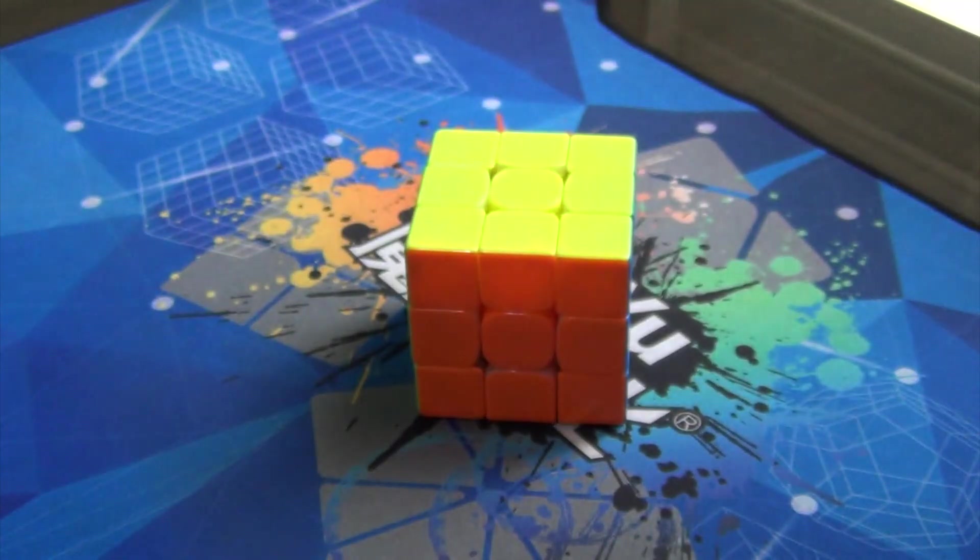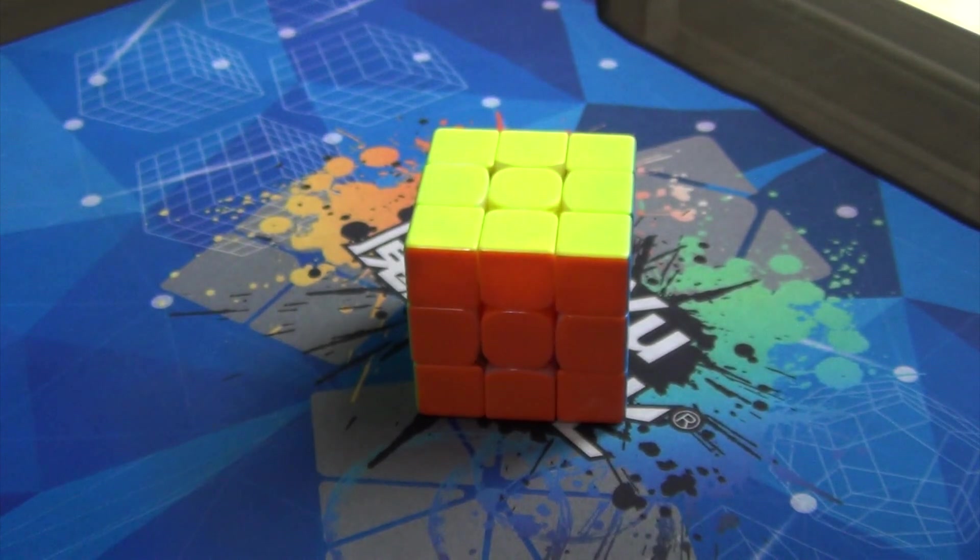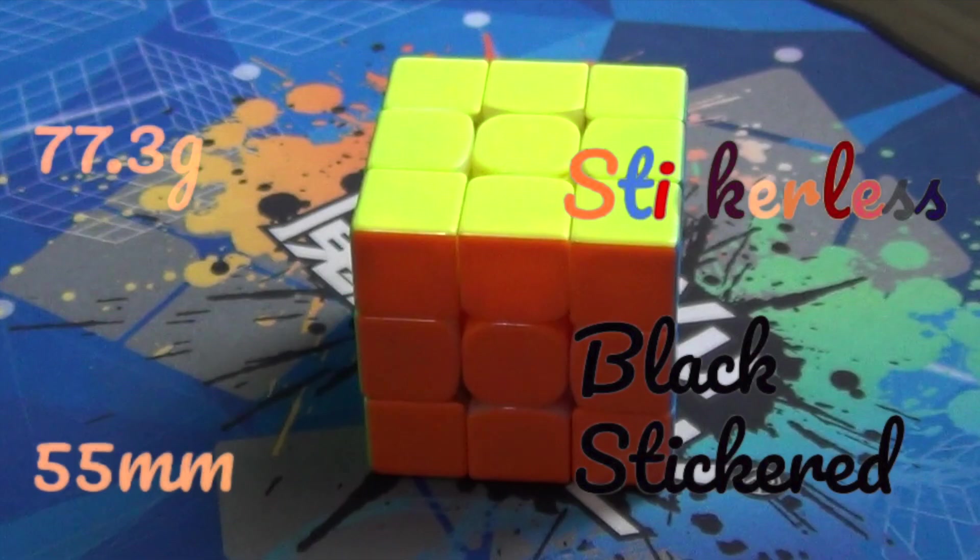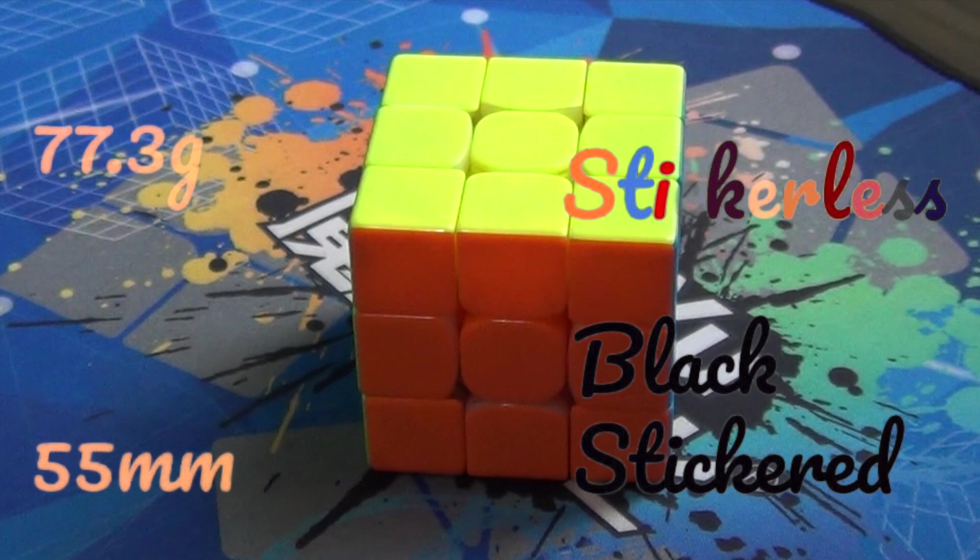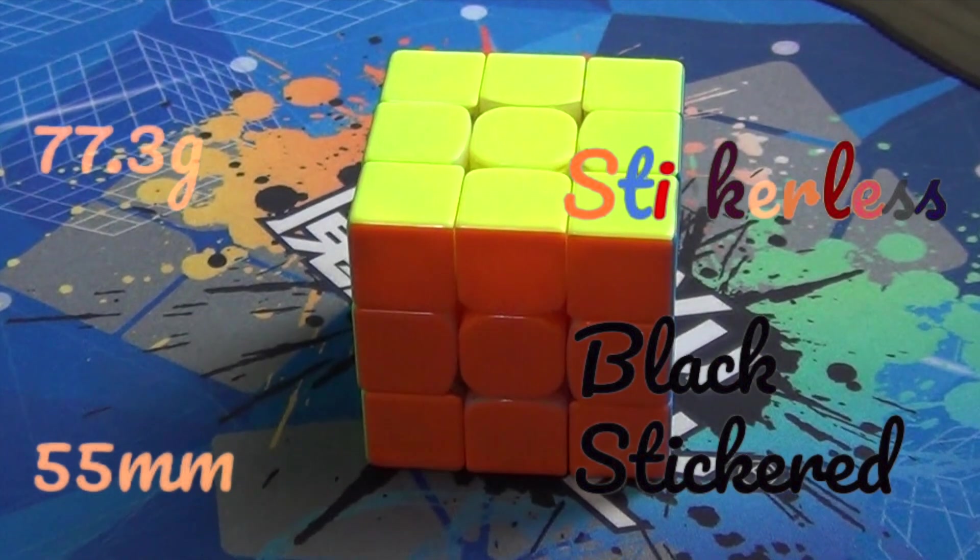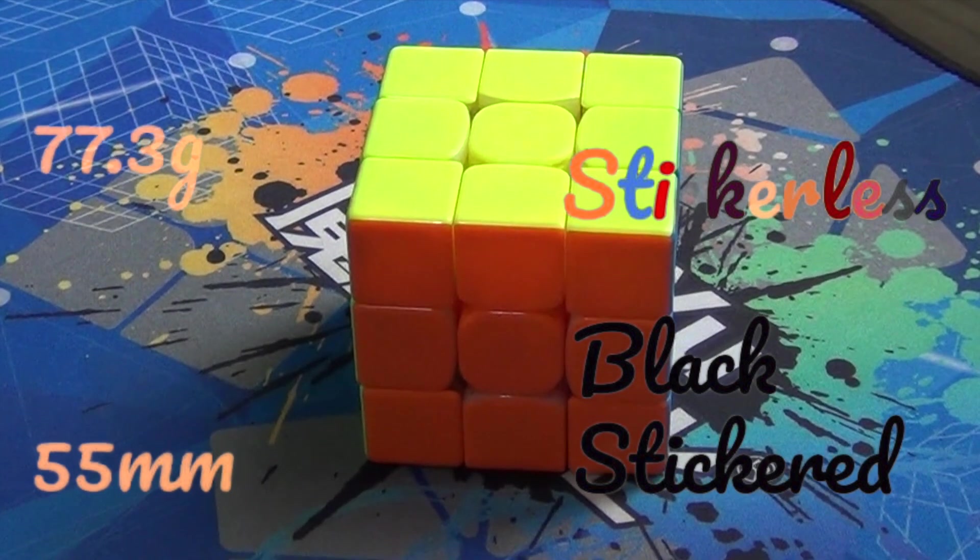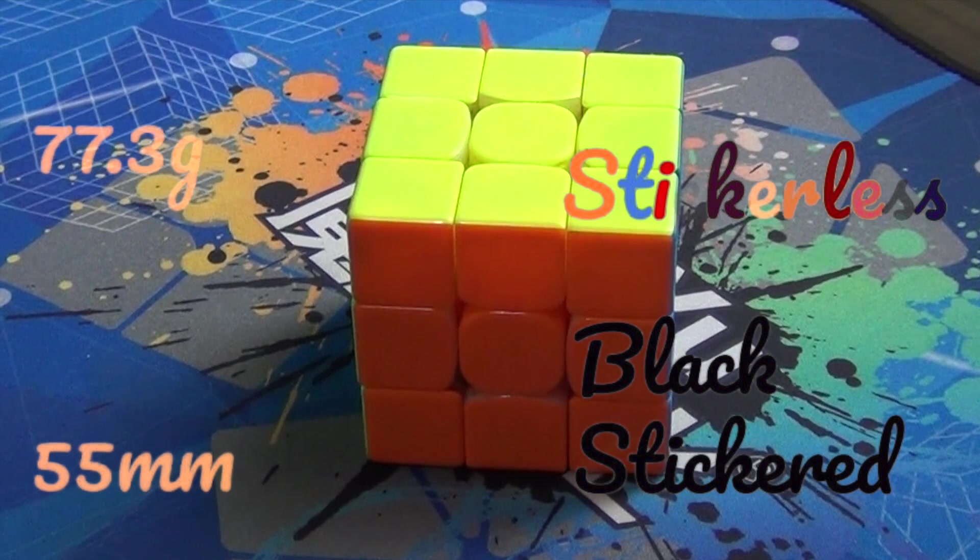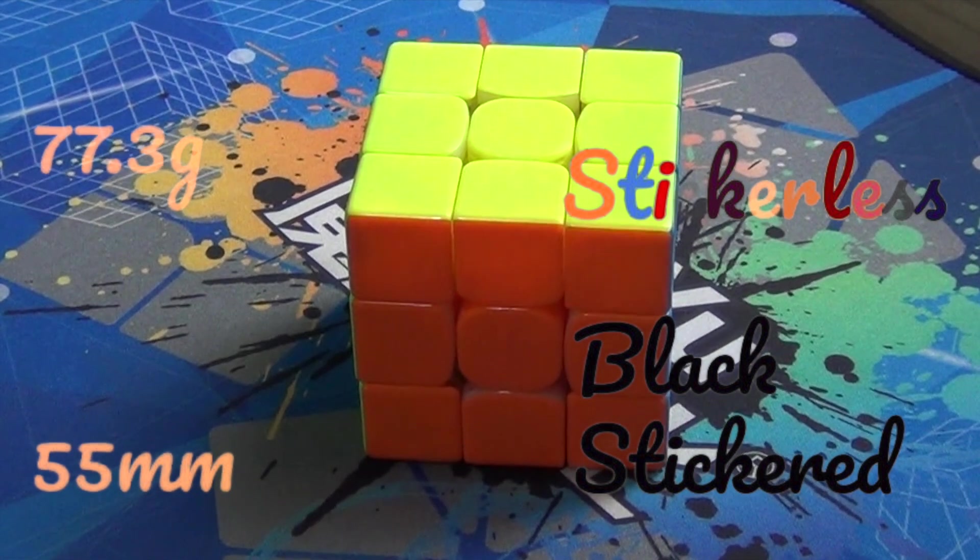Hey what's up guys, it's your boy Spy Fantastic here and today I'll be reviewing the Dayan Tengyun M. The Dayan Tengyun M has a 55 millimeter edge length and a weight of 77.3 grams and can be purchased in both stickerless and stickered variants.